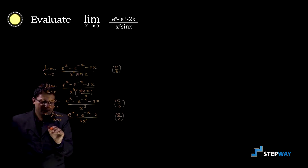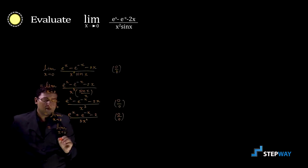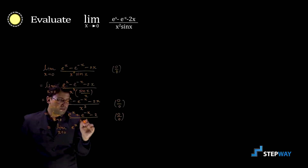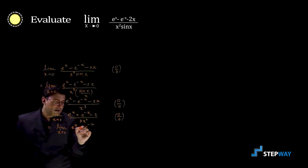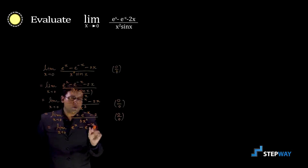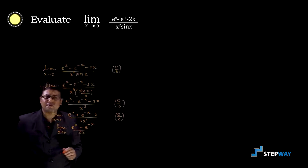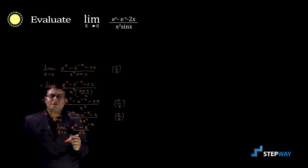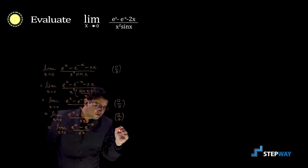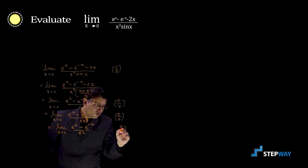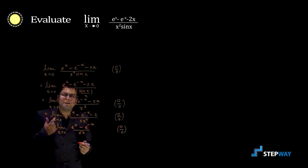We apply L'Hôpital's rule again. Differentiating the numerator gives e raised to x minus e raised to minus x, and differentiating the denominator gives 6x. Putting x equal to 0: numerator is 1 minus 1 equals 0, and denominator is also 0. So it is 0 by 0 form again, and we apply L'Hôpital's rule once more.